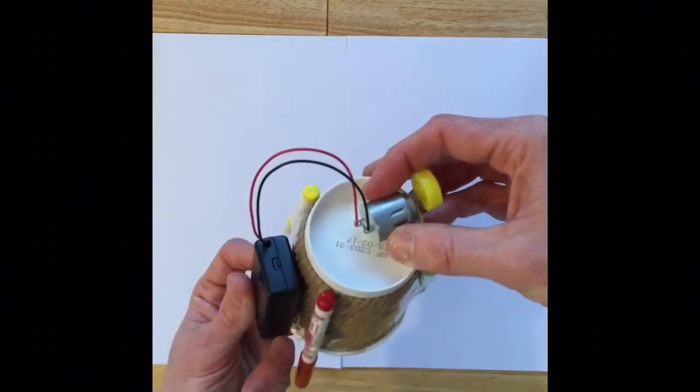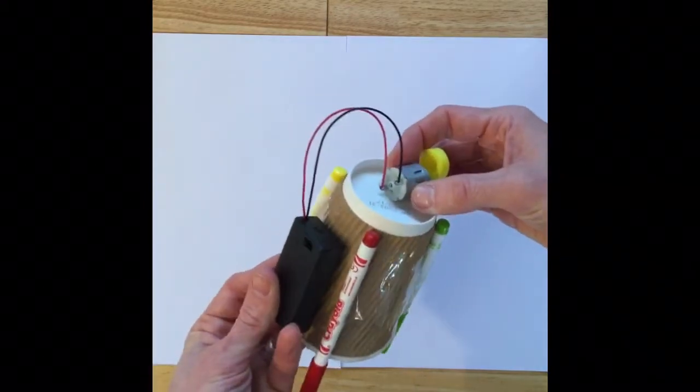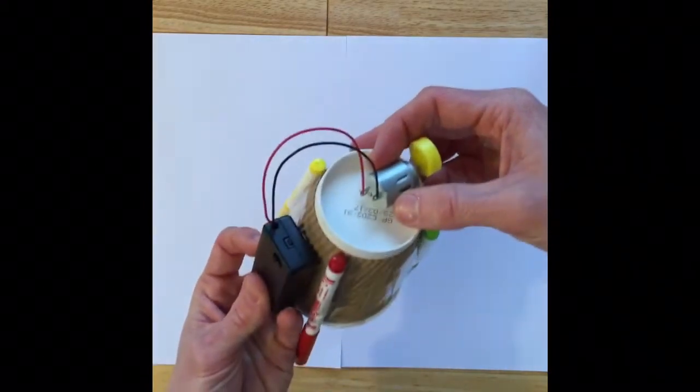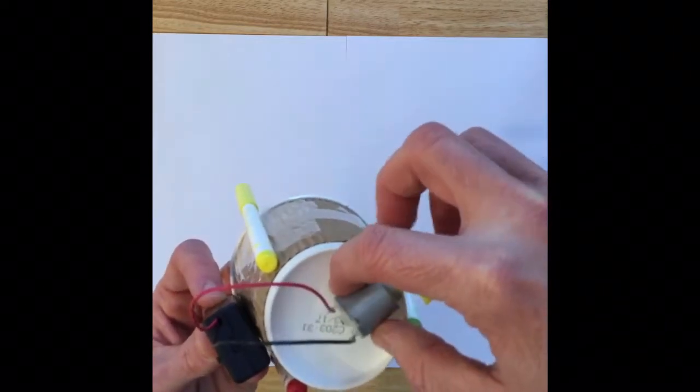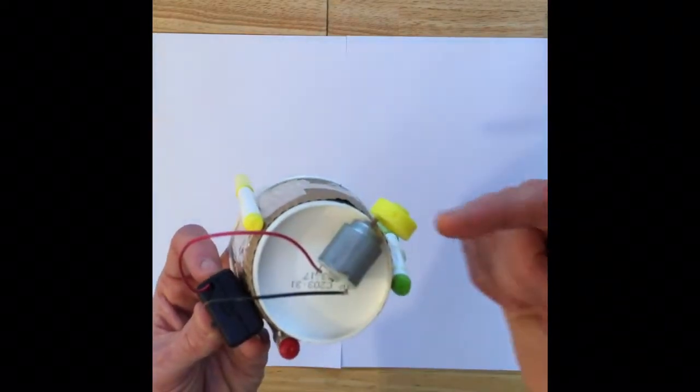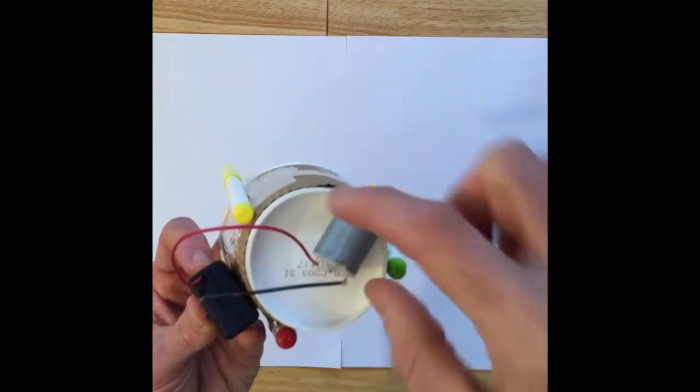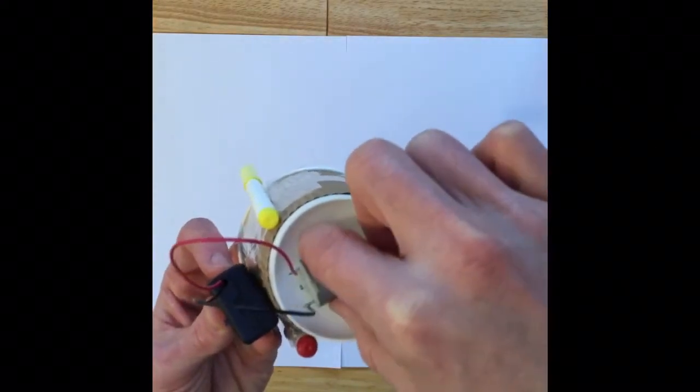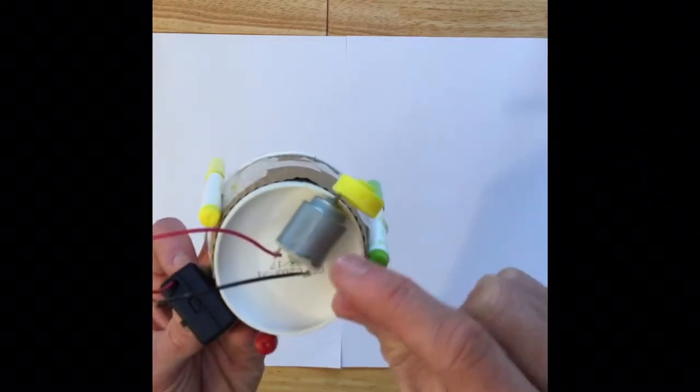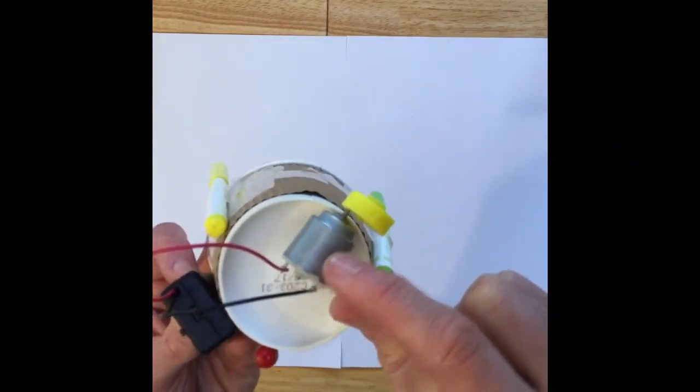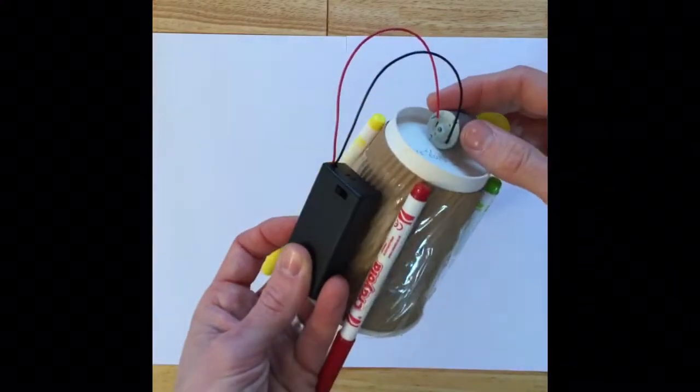It's just thinking about different materials and their properties and which one's going to work best. The motor needs to be on the side so that it can rotate and the counterweight can spin. If I had it in the middle, that wouldn't work, it would just be bumping against the cup. So it needs to be off to the side so it's got space to spin. Maybe a big pile of blue tack is going to be best for this and maybe some sellotape best for the side there.